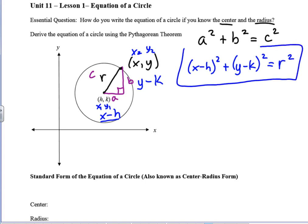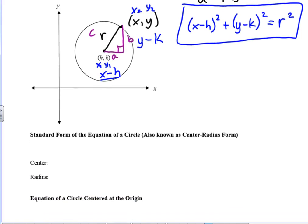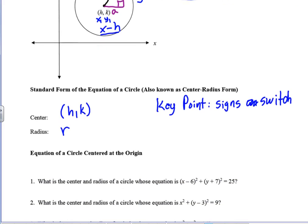So we've just come up with the equation for the center of a circle. It's also known as center radius form, where the center is the point hk, and the radius is the length of r. Now it's not like critical that you know how to derive that formula using the Pythagorean theorem. The key is to recognize that the signs will switch.